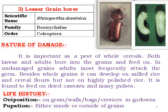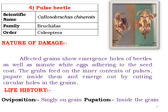Pulse weevil, Callosobruchus chinensis, is found in both field and storage. Emergence holes can be observed in infested grain. Grubs feed on the inner contents of pulses and pupation occurs inside the grain. Adults emerge by cutting circular holes in the grains. Egg-laying occurs singly on the grain surface and pupation takes place inside the grain.